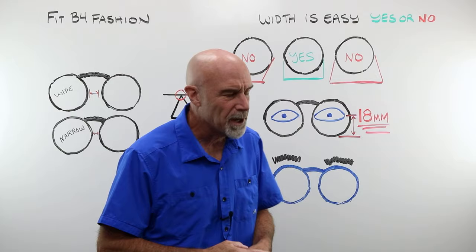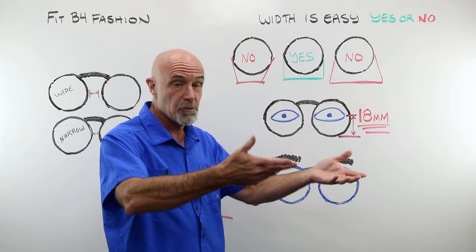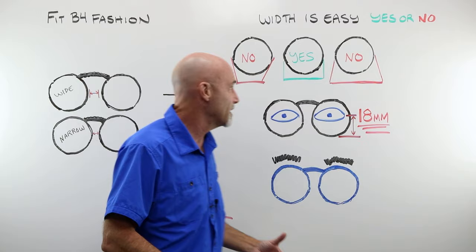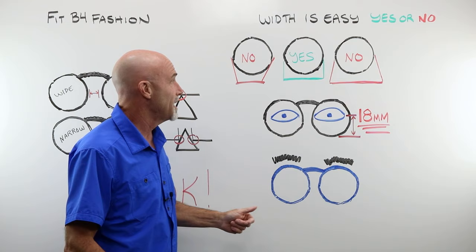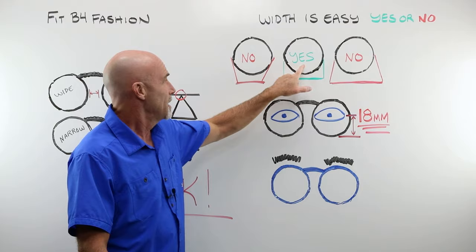Now, why do we look at width first? Well, because it is just so incredibly easy. Customer goes over, takes something off the board, puts it on, you can tell in just an instant, one quick glance, does it fit or not? If it doesn't, there's no reason to look at the nose. There's no reason to get up close and personal and look behind their ears for temple length. It's a quick triage. Yes, no. Does the frame look like this? It's a no. Does it look like this? It's a no. Does it look like this? Yes. Now we can continue on with the process.